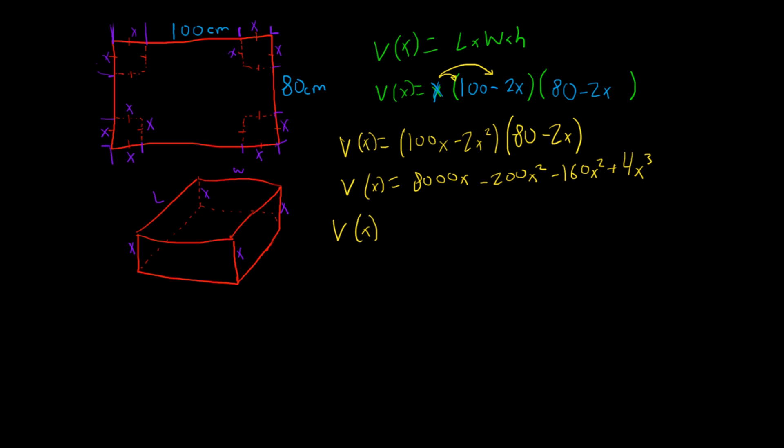then you could write it as 4x cubed. And then we're going to collect the like terms from these guys. And so, what's negative 200x squared minus another 160x squared. That's a negative 360x squared. And then you're adding 8,000x. So, therefore, the volume of this is going to be equal to this function right here.